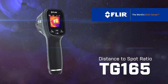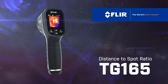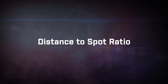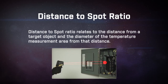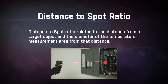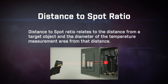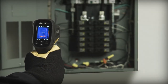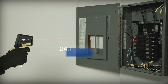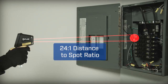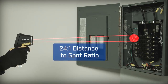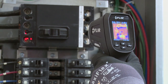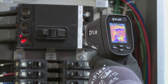What is distance-to-spot ratio? Distance-to-spot ratio relates to the distance from the target object and the diameter of the temperature measurement area from that distance. On the FLIR TG-165, we have a ratio of 24 to 1, meaning at 24 inches you're measuring a 1-inch diameter.